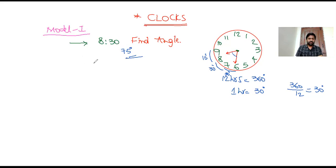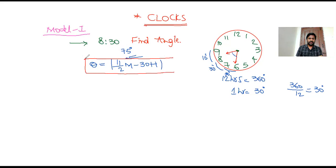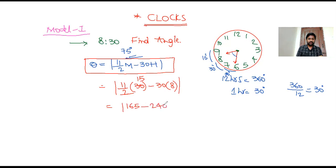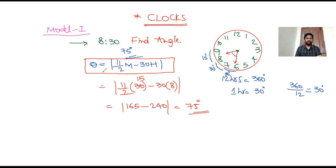For cases like 6:22 or 1:35 or 3:46, we use the formula: θ = |11/2 · m − 30h|. Substituting for 8:30: 11/2 × 30 − 30 × 8 = 165 − 240, so |−75| = 75 degrees. The formula is θ = |11/2 · m − 30h|, where m = minutes and h = hours.